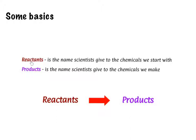I've given us two definitions. Reactants: the name scientists give to chemicals we start with, or we mix together. Products: the names of the chemicals we make by mixing chemicals together. This sounds really easy, but as we'll see later on when you do the sections on photosynthesis and respiration, this becomes much more sensical.